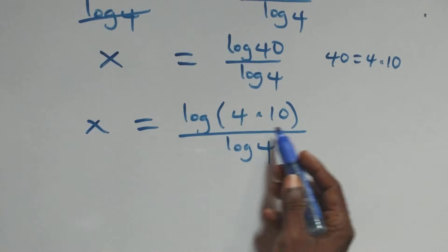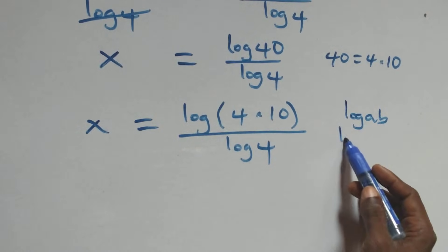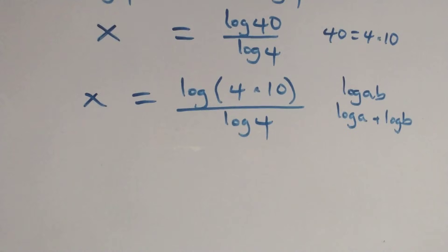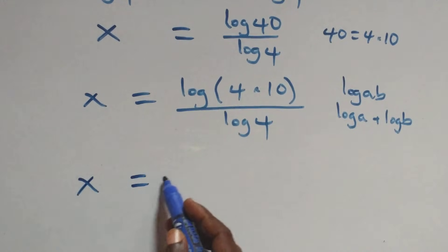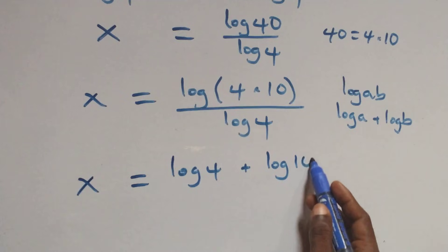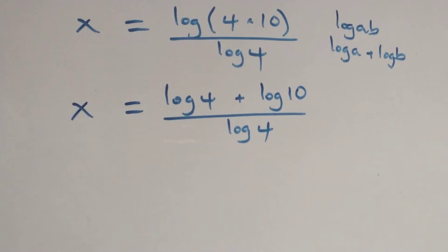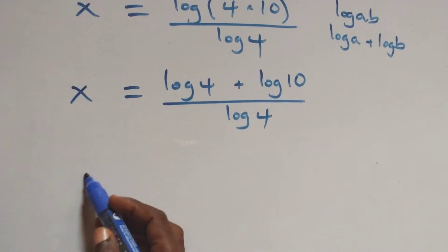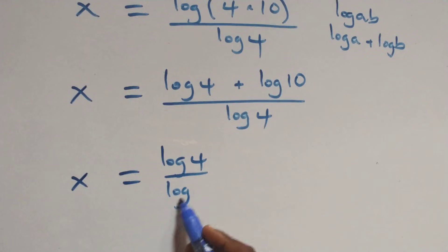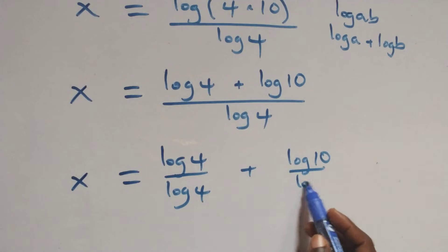Which implies, when we have log(a times b), this is the same thing as log a plus log b. So here we have x equals to log 10 over log 4. Then here we separate this into two fractions and we have x equals to log 4 over log 4 plus log 10 over log 4.